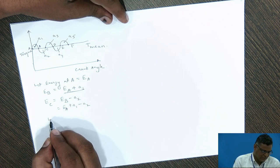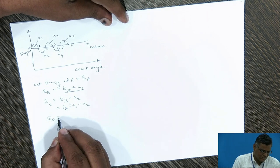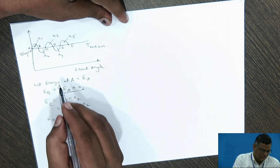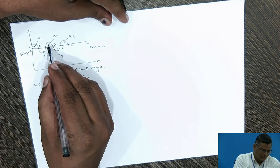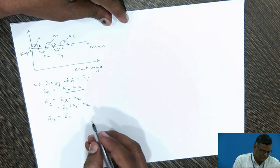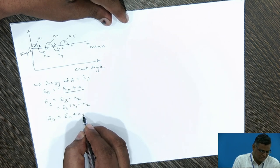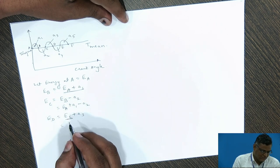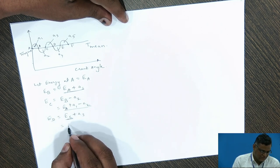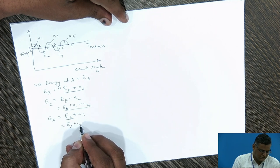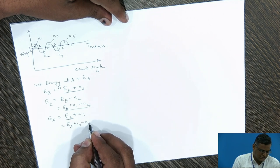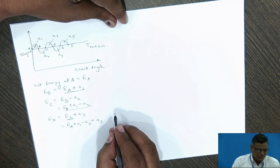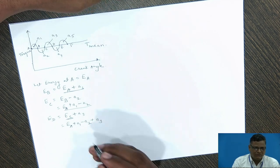Energy at D: from C to D, we take energy at C, and since the area from C to D is on the upper side of the mean torque line, it is plus A3. Energy at C is already known as energy at A plus A1 minus A2, so energy at D equals energy at A plus A1 minus A2 plus A3. Like this, the energy at different points can be calculated.